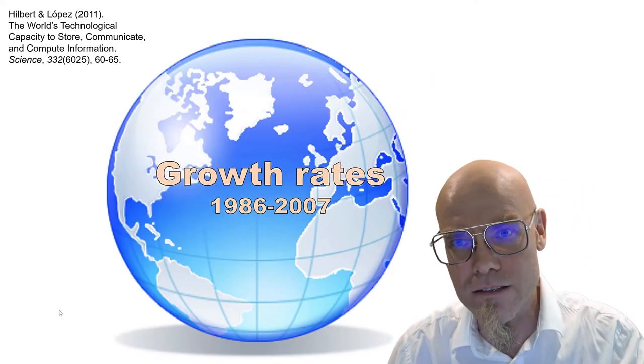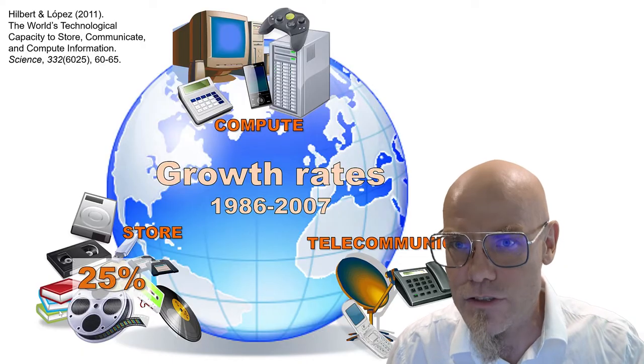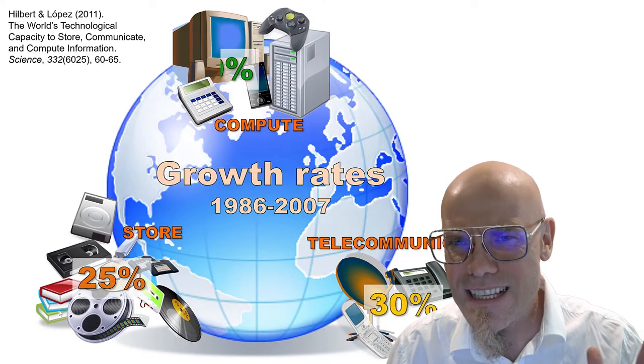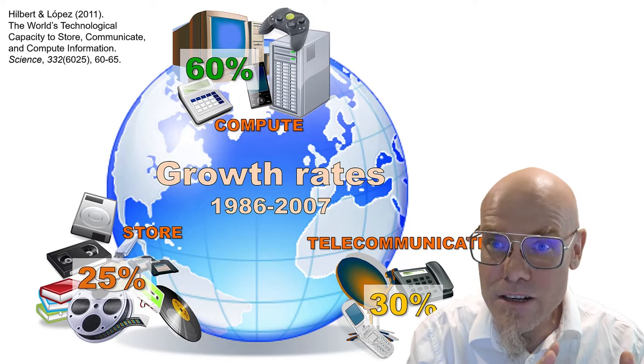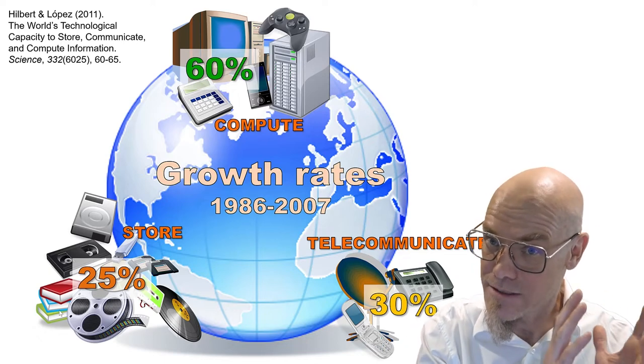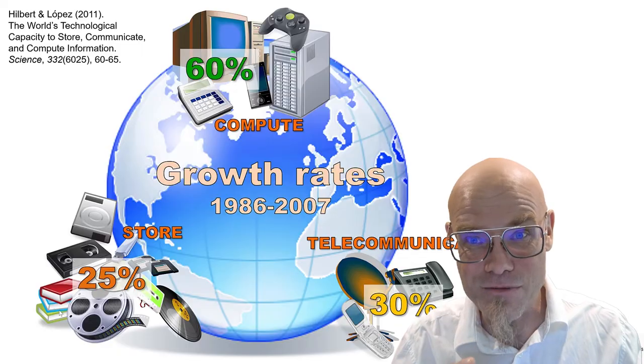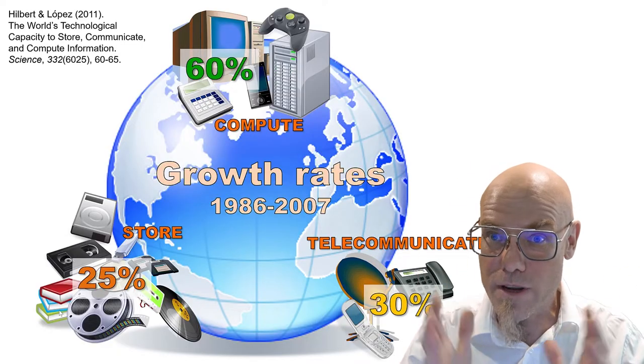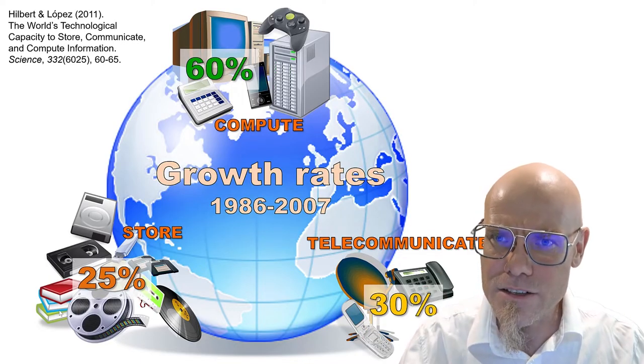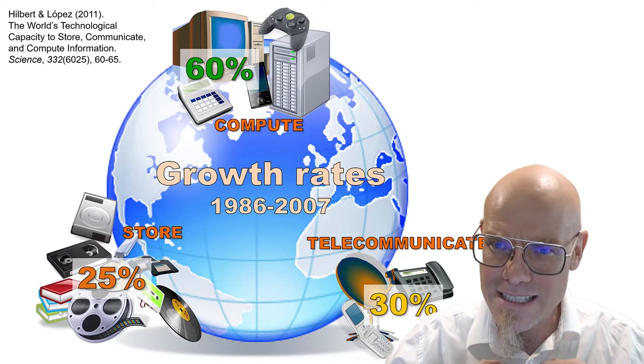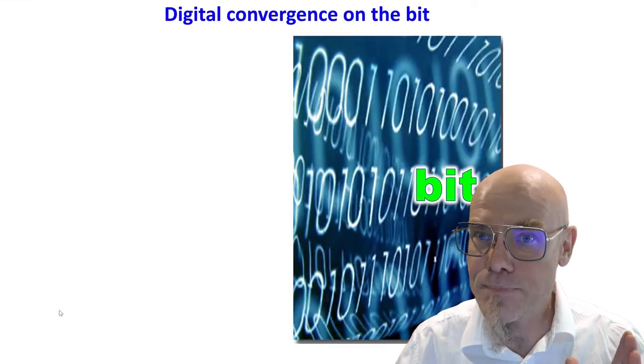So over these 20 years around the change of the millennia, storage and communication and computation has grown at double digit rates, 25%, 30%, 60% per year. Usually social change, population grows at less than 1% a year. The economy, what does it grow? 1.5% on average, if it grows. Sometimes it doesn't grow, we call that recession. And this has been growing over 20 years. This was the decisive time where we basically digitalized the world's information and communication stockpile.